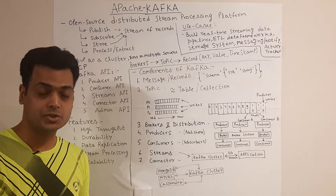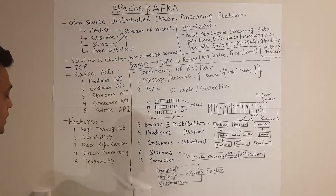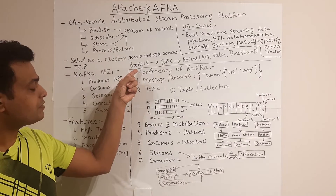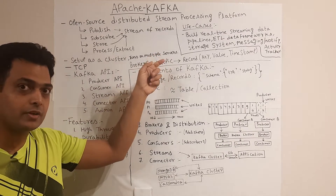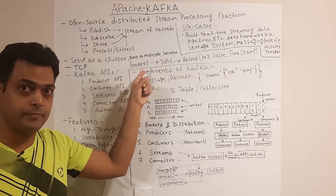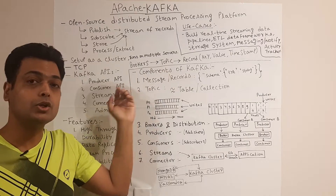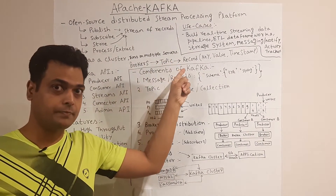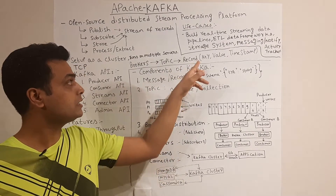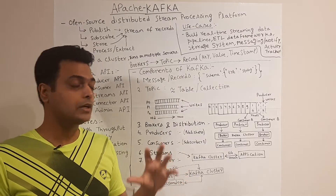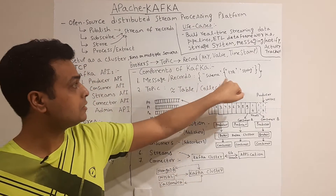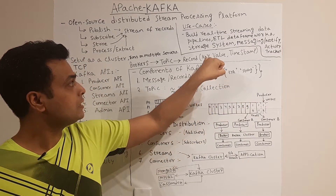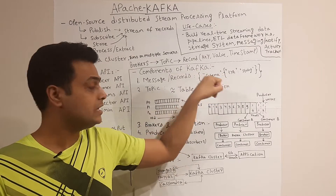The connector API is used to basically connect multiple data sources and either pull in data or stream data out of Kafka. When you deploy Kafka on a server it's called a broker. A broker can have multiple topics and topics can have multiple records. A record is nothing but a key, value, and timestamp.